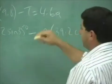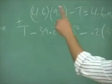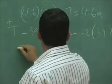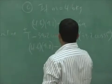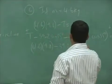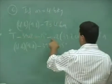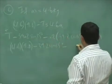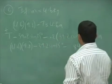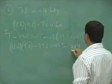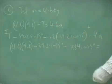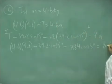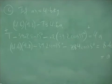Now add the two equations — T drops off. You have: 4.6 times 9.8 minus 39.2 sine of 35 minus 0.2 times 39.2 cosine of 35 equals the total mass times a. Adding the right side: 4 plus 4.6 gives 8.6a. That gives you the acceleration of the system.